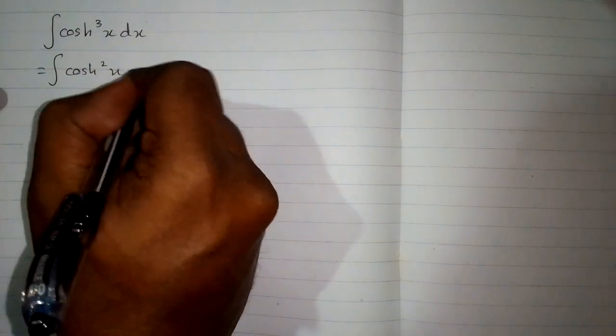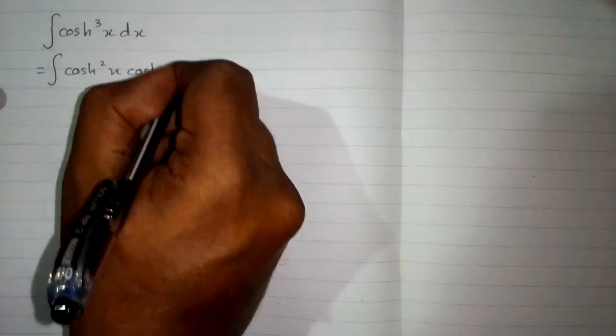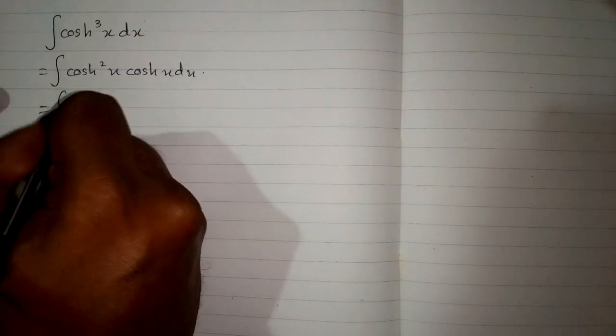In this video we will find the integral of hyperbolic cos cube x. This can be written as hyperbolic cos square x multiplied by hyperbolic cos x, and we know that hyperbolic cos square x is equal to one plus hyperbolic sin square x.